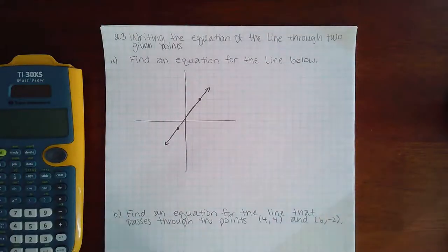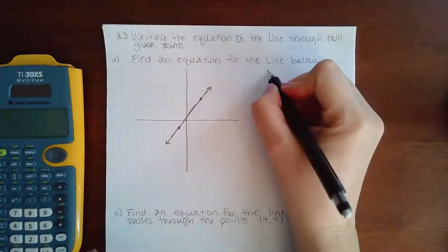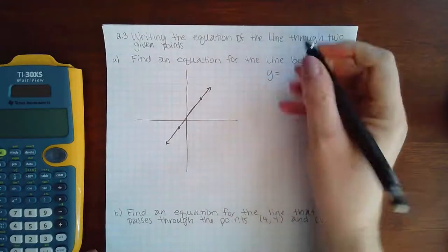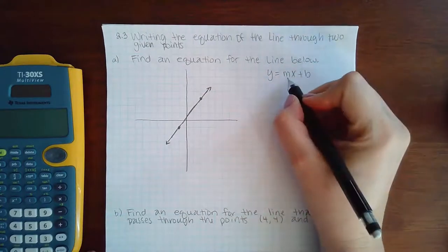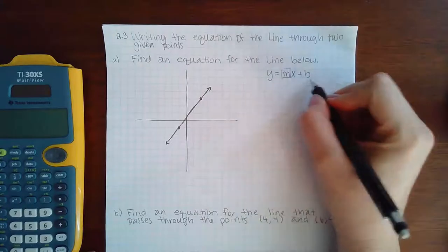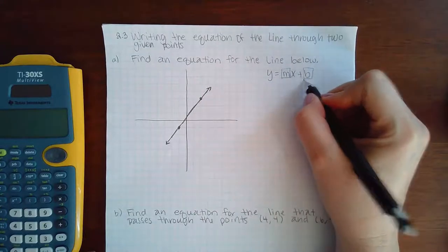Okay, here we have 2.3 writing the equations of a line through two given points. Find an equation for the line below. We know that in order to find the equation of the line, we have this formula. We do need to know the slope and the y-intercept in order to find this equation of the line.